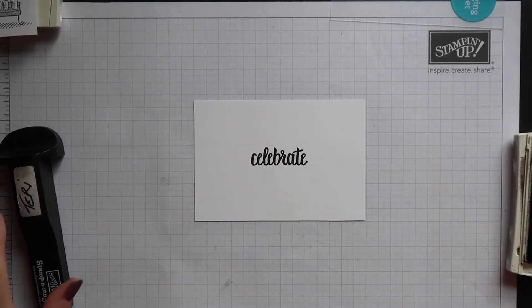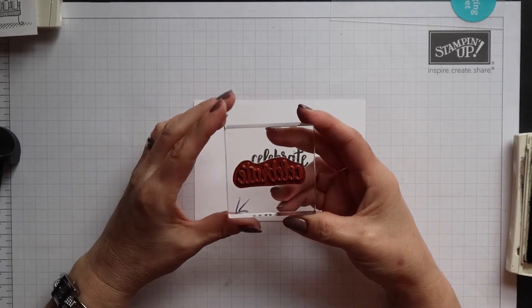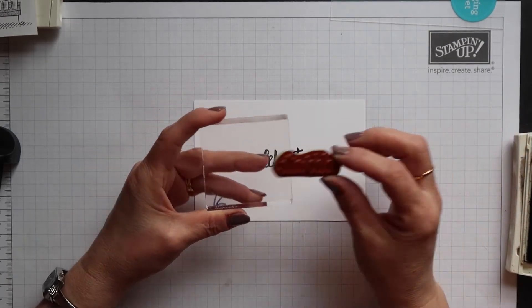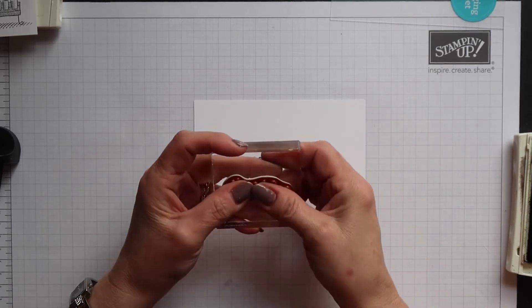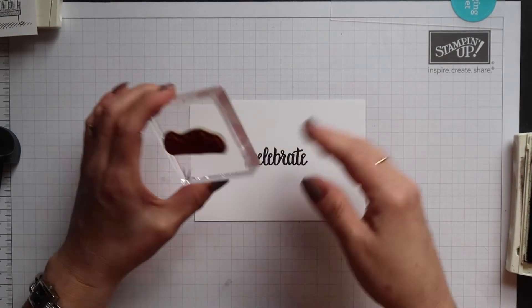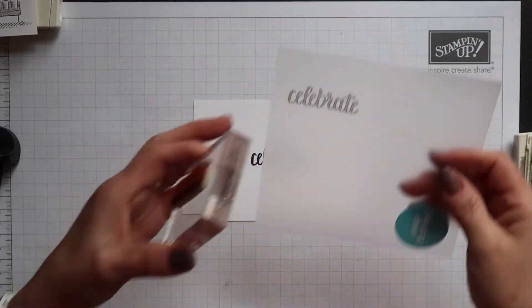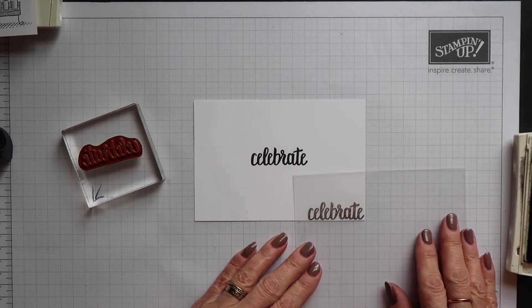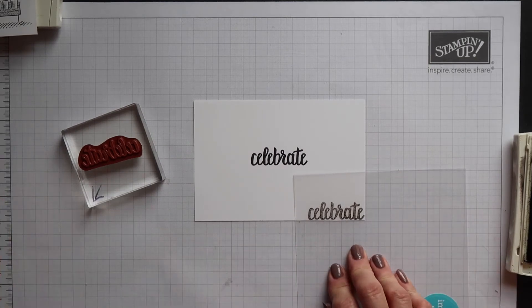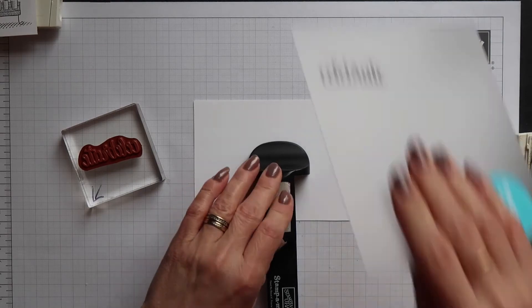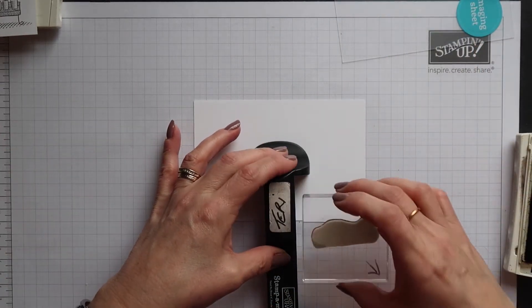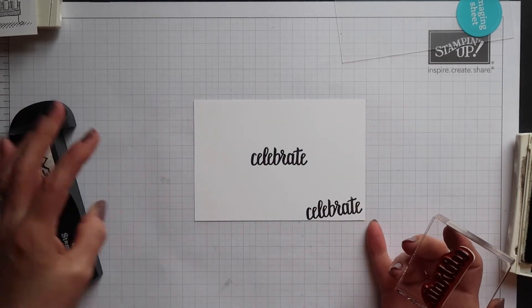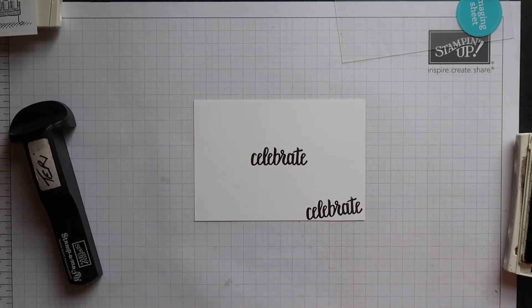Now one thing to remember when using clear mount stamps is that if this stamp comes off the block perhaps when you're cleaning it and you put it back on you cannot then reuse the original imaging sheet that you created for it. Okay I'll show you what can happen if you do. So this time I want that sentiment in the bottom right hand corner so I'll ink up my stamp and stamp it down but oops not in the place I want it.